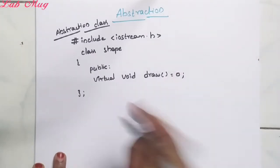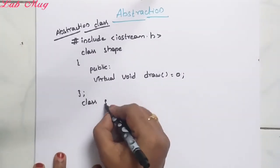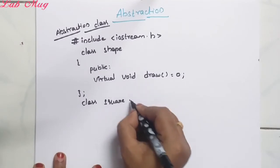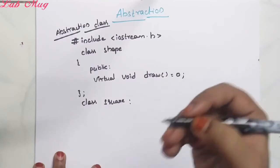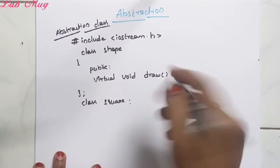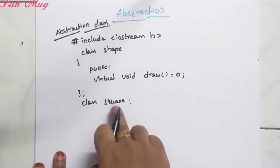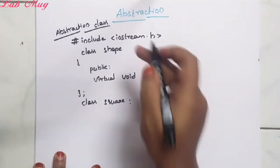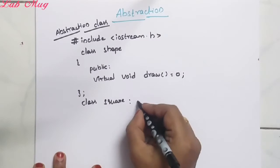Virtual function ni define cheskundam, next class ni close cheskundam. This is Shape class. Next one more class - Square. Manam eppudu ithe inheritance concept perform cheskundam - must and should ga base class ki derived class ki relationship declare chestham.